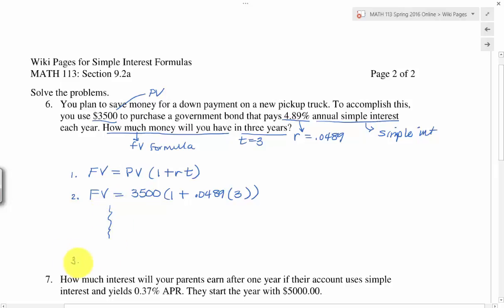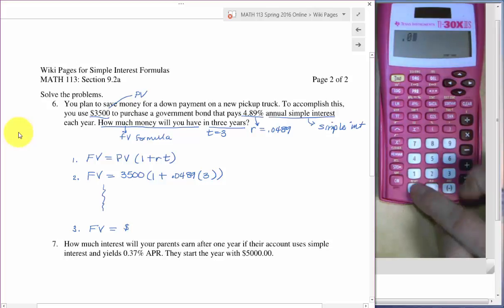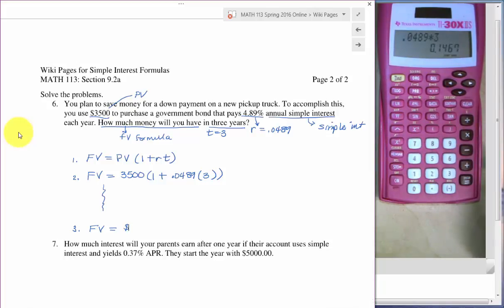But the third thing that I'm looking for is your answer. And so that will look like FV equals and probably a dollar sign and some amount of money. So the parts in between are going to go like this. I need to look inside my parentheses and work there first. So I'll do this multiplication first. So that's 0.0489 times three. I'll leave that sit on my calculator, but I can write it out if I want to.